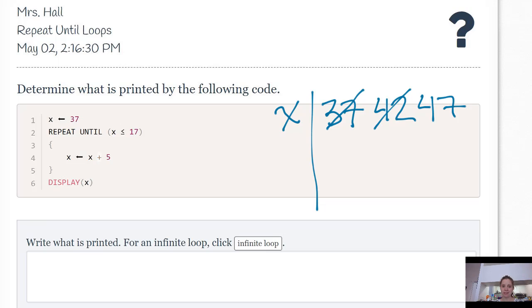Well, maybe you're starting to see that every time we go in this repeat loop, we're adding 5 to the value stored at x. So that x value is never going to be less than or equal to 17, so this is an example of an infinite loop.